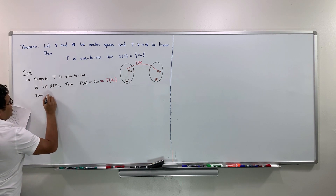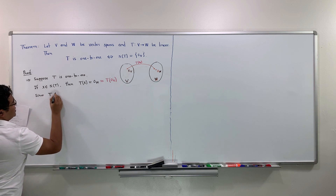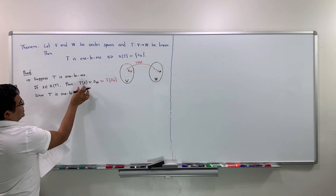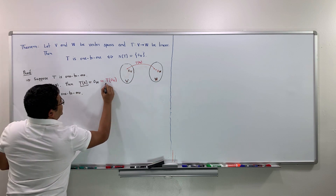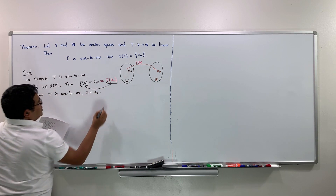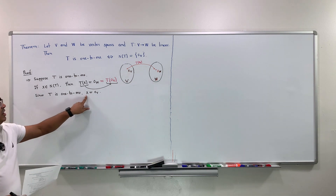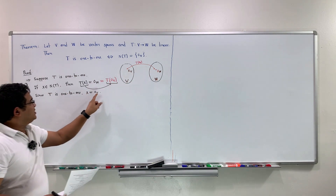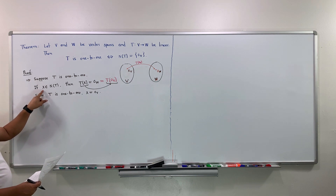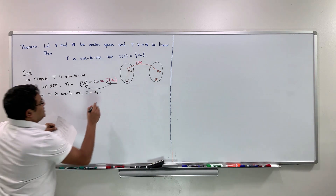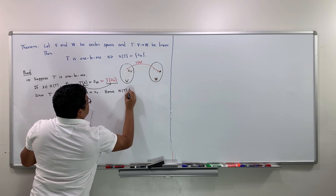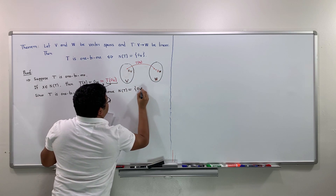Since T is one-to-one, T(x) = T(0_V) implies x equals 0_V. That means the only vector that maps to the zero vector in W is the zero vector in V. Hence, the null space of T is the zero vector in V. This completes the first direction of the proof.